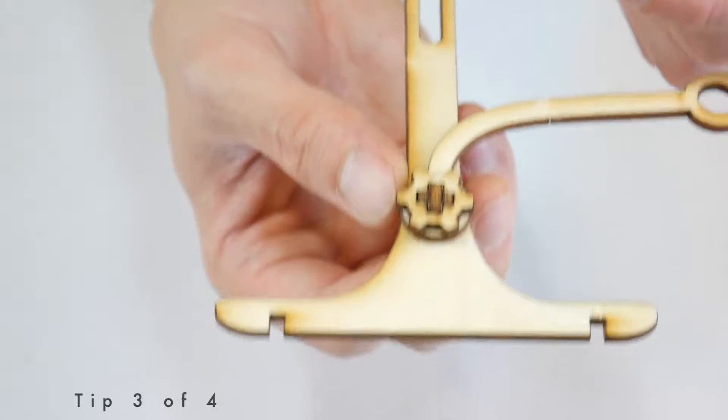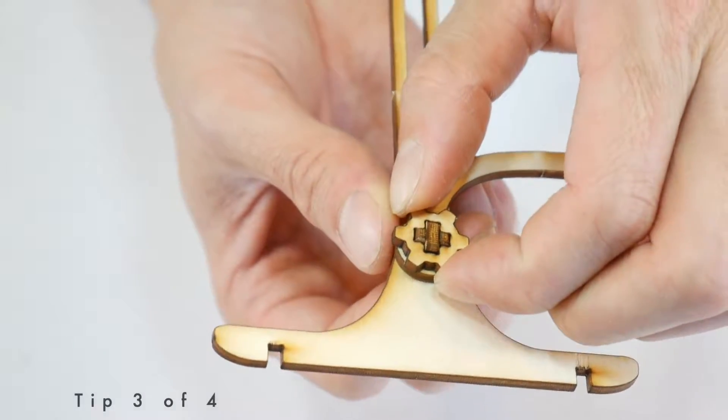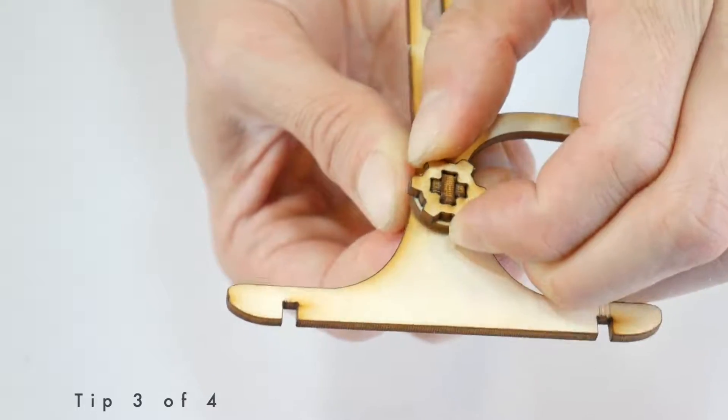Tip number three. If you need to take something apart by hand, the easiest way to do this is to firmly pinch it and as you pull, wiggle the piece from side to side.